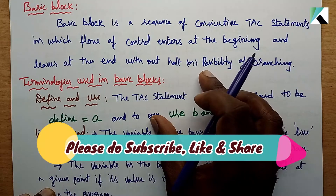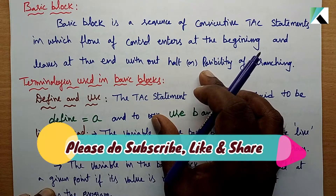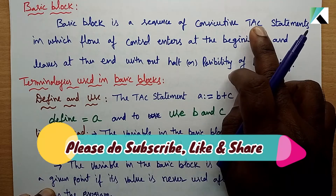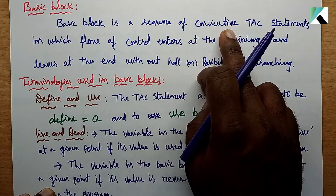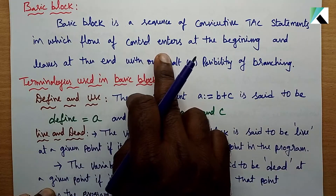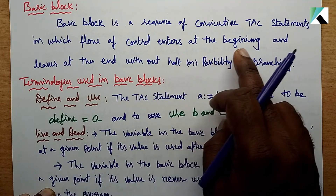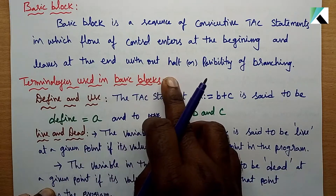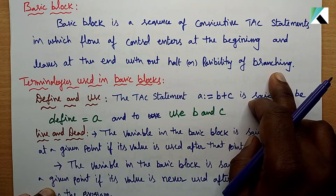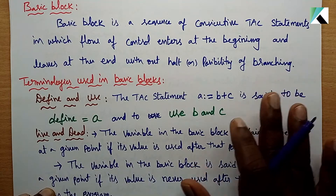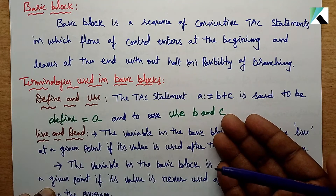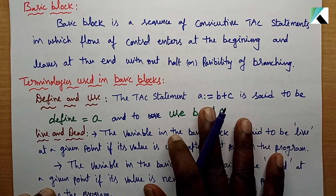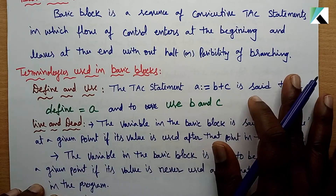A program written at a high level is converted to Intermediate Code, which represents TAC statements. A Basic Block is a sequence of consecutive TAC statements in which flow of control enters at the beginning and leaves at the end, without halt or possibility of branching. The Basic Block is used by the Flow Graph.